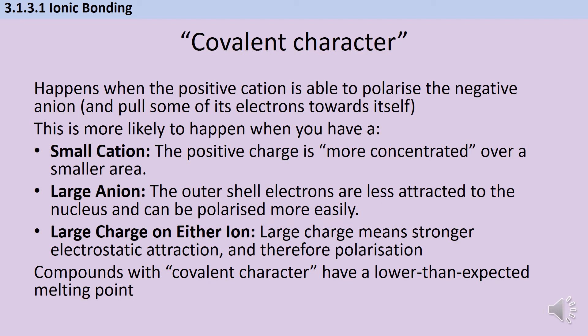This is particularly likely with a very small cation, because the positive charge is more concentrated over a small area; a large anion, because those outer shell electrons are less attracted to the nucleus and polarize more easily; and when you have a particularly large charge on either ion, meaning stronger electrostatic attraction and therefore polarization. Compounds with covalent character have a lower than expected melting point compared to pure ionic bonding.